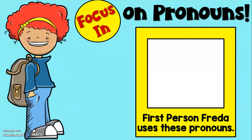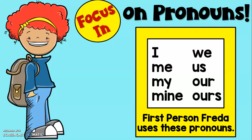So when we're talking about first person, Frida is going to be helping us. First person is where the narrator speaks about himself or herself, and the narrator is usually also the main character. Some of the pronouns you're going to see that will help you know you're reading a first person point of view are: I, me, my, mine, we, us, our, ours. Those pronouns indicate that this is written in first person. The narrator is speaking about himself or herself.